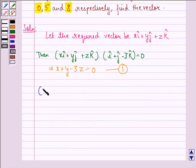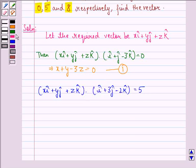Similarly, xi cap plus y j cap plus z k cap dot i cap plus 3j cap minus 2k cap is equal to 5. This implies x plus 3y minus 2z equals 5 and we call this equation 2.